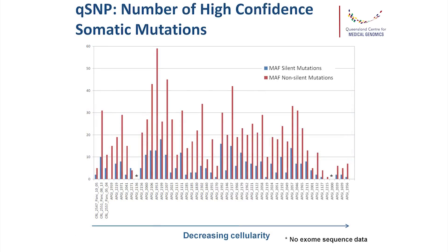Unfortunately, when we look across the cellularity of our tumours and the number of mutations detected, this doesn't track at all with cellularity. The ability to call mutations — or the number of mutations — is completely independent of the cellularity of the tumour. So we really do need to be able to go deep and specific on our tumours to detect mutations in the genes that are of interest to us.